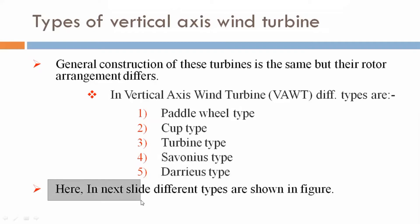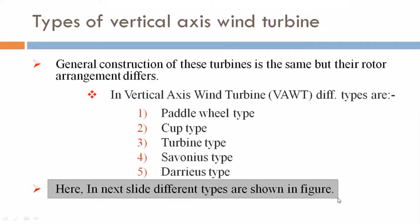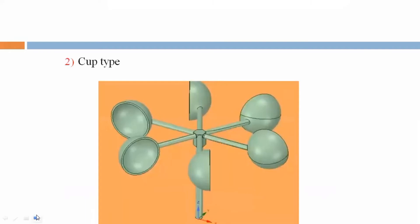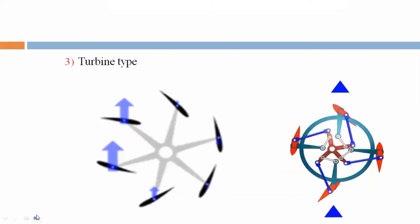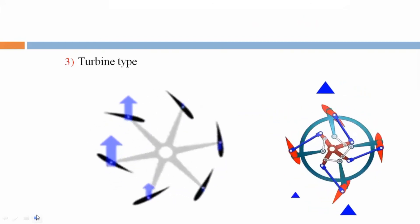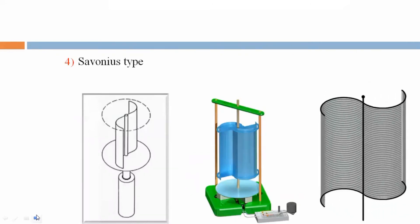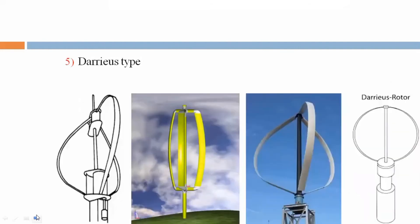In the next slides, different types are shown in figures. This is the paddle wheel type. This is the cup type. This is the turbine type. This is the Savonius type. Drag type, multi-blade and split type. This is the Darrieus type.